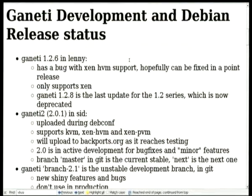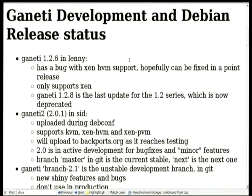Development in Debian release status: We have Ganeti 1.2, which was our former release. We don't use it anymore — it's in Lenny. Anything which is in Lenny is already old, right? XenHVM doesn't work, but Justin is trying to fix it in a point release. You can only use XenPVM. The latest stable is Ganeti 1.2.8 — it has a couple bug fixes from 1.2.6. But in general, just don't use any of them.